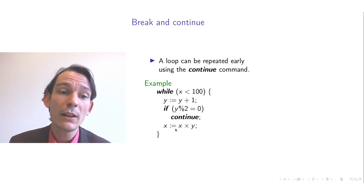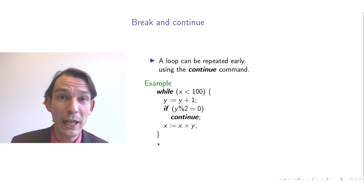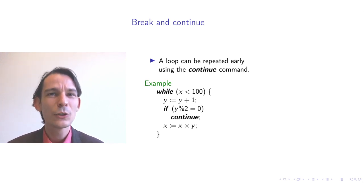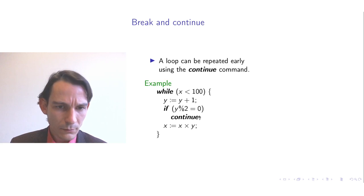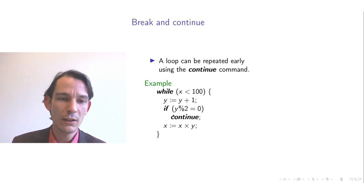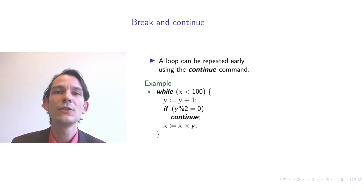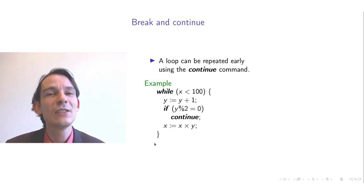If a while body contains a continue, the only way to exit the loop is if the test is false — unless there is also a break command. Whenever the control point reaches the command following the while, it must be the case that the test evaluated to false.